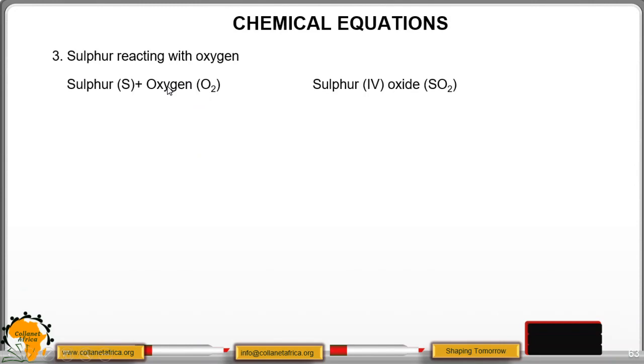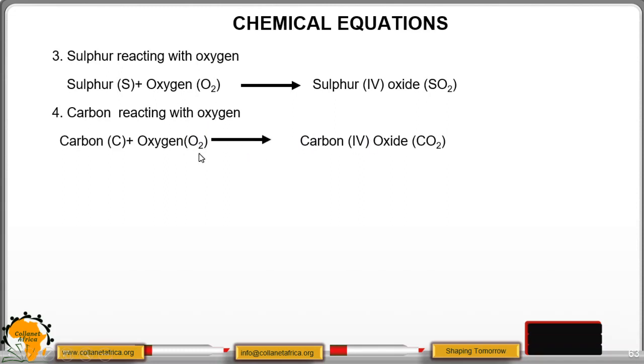Then we have another example, sulfur reacting with oxygen. You get sulfur IV oxide SO2. Then carbon reacting with oxygen. You get carbon IV oxide CO2. It is good to note here. You are not writing O only, it is O2 because this is a gas. It does not exist as an atom. It exists as a molecule.